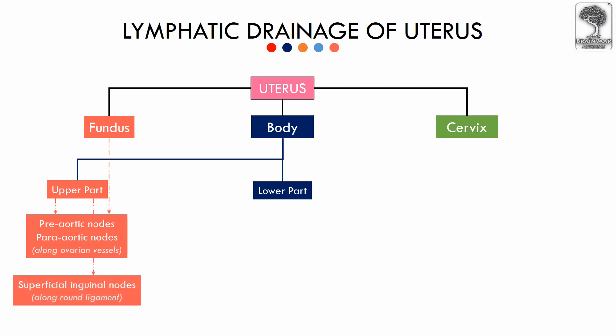The drainage from the corner of the uterus to the superficial inguinal lymph nodes runs along the course of the round ligament of the uterus, which is also called ligamentum teres uteri. The lower part of the body of the uterus drains along the broad ligament into the external iliac lymph nodes.